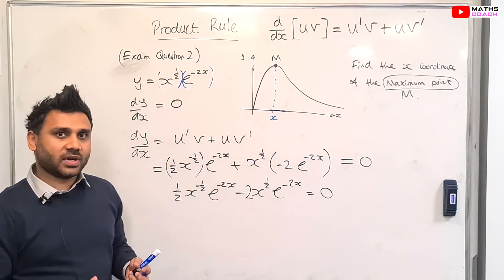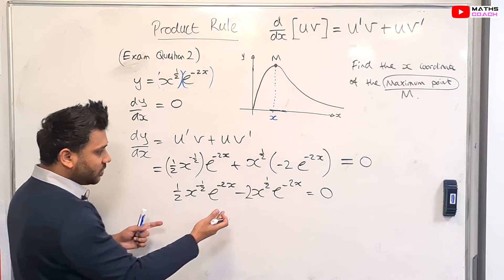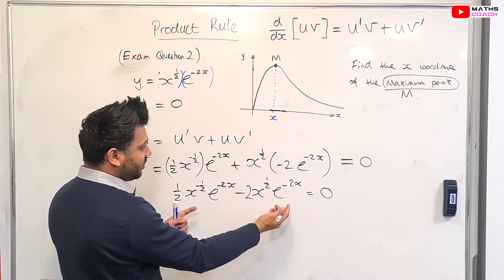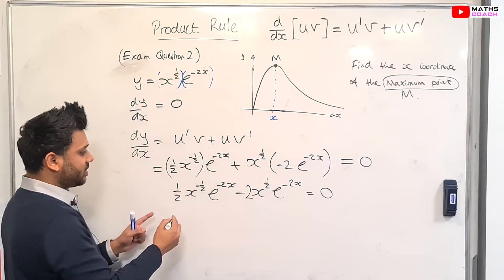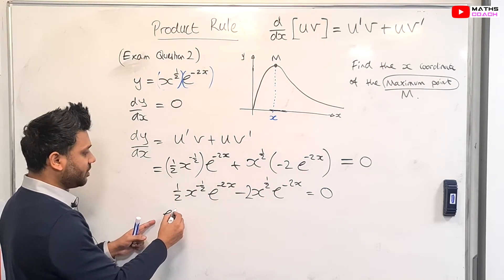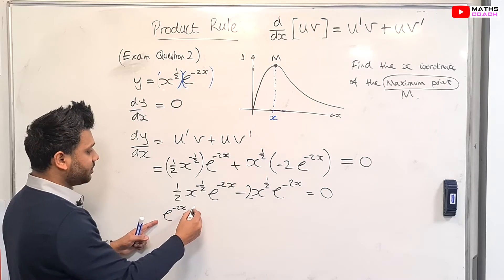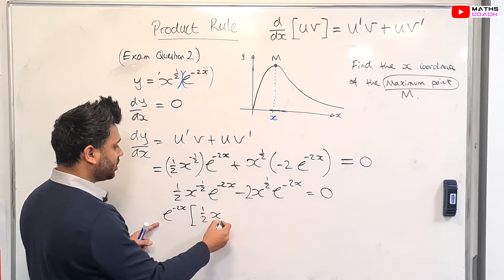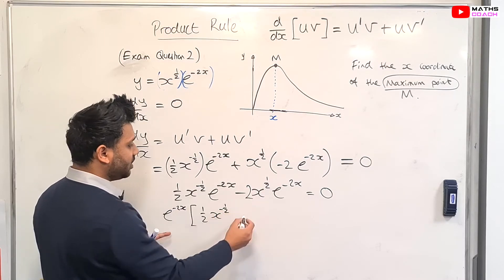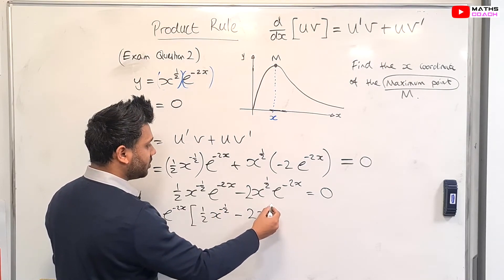We need to solve this equation. What's common in the two terms we have is that they both have the same exponential factor. So let's factorize out this exponential e to the minus 2x.